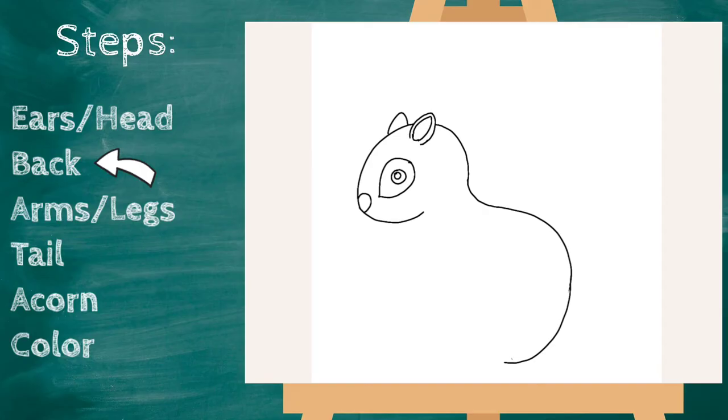Alright, perfect. Next step, let's draw his arms. So go right about here where the face ends and we're gonna draw a line that goes out like this. That's gonna be the top of his little arm and hands. It's gonna curve around and then down and up.